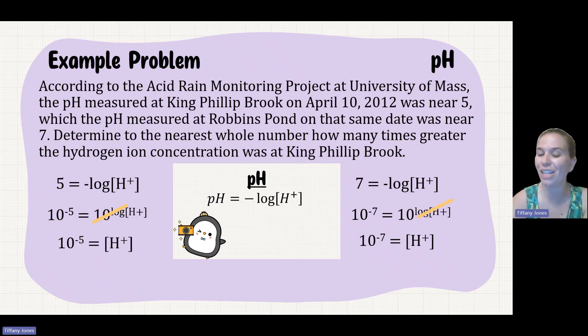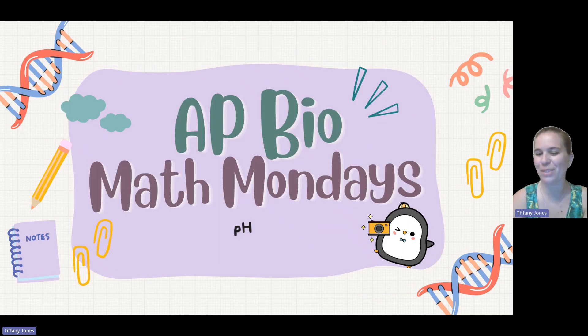The difference is 100, so there are 100 more H+ ions at pH 5 compared to pH 7. Hope this was helpful. Remember, 8, 5, Penguins, just success. Bye, y'all.